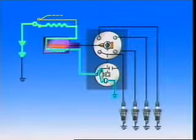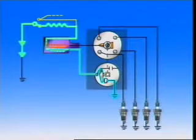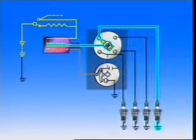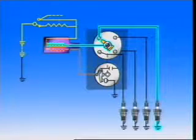The system has two circuits. The primary or low tension circuit initiates the spark. The secondary or high tension circuit produces the high voltage and distributes it to the spark plugs.